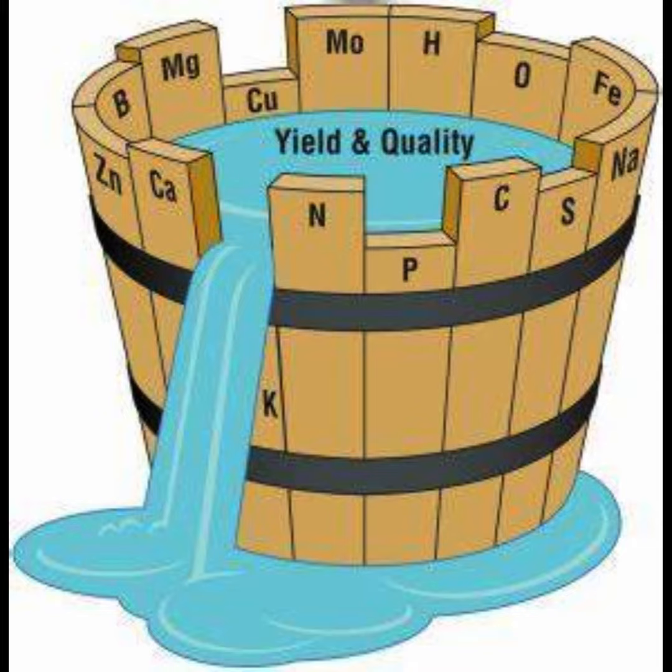For example, imagine a plant that requires sunlight, water, and nutrients to grow. If there's an abundance of sunlight and water but a deficiency in nutrients, the plant's growth will be constrained by the lack of nutrients, even though sunlight and water are plentiful. In this scenario, nutrients are the limiting factor, and Liebig's Law emphasizes that addressing the shortage of nutrients is crucial for optimizing plant growth.